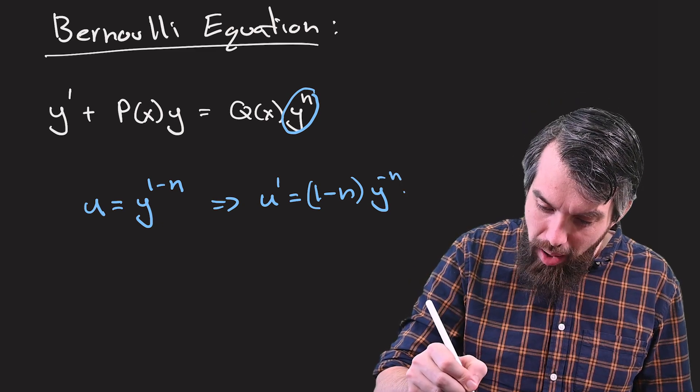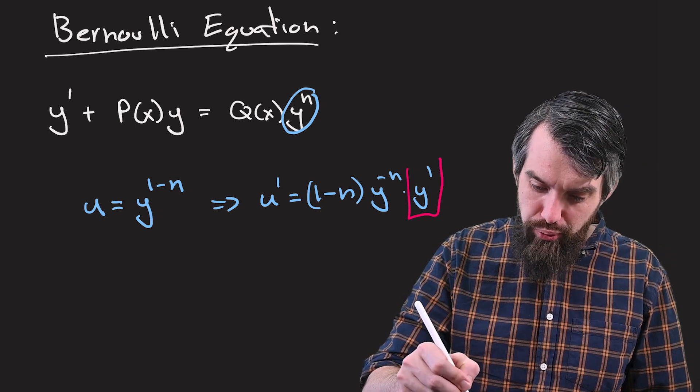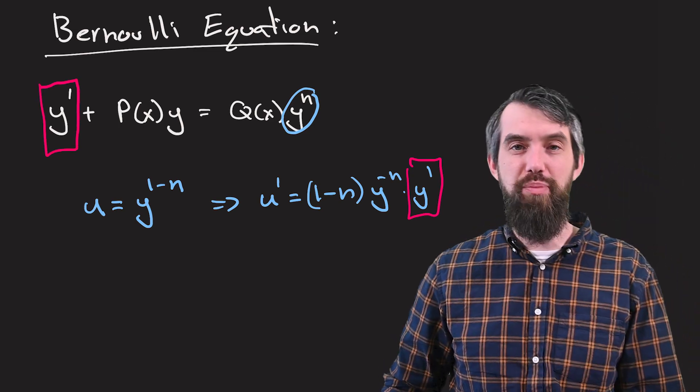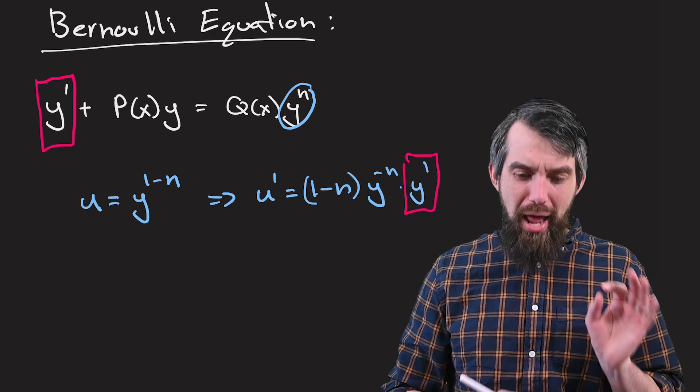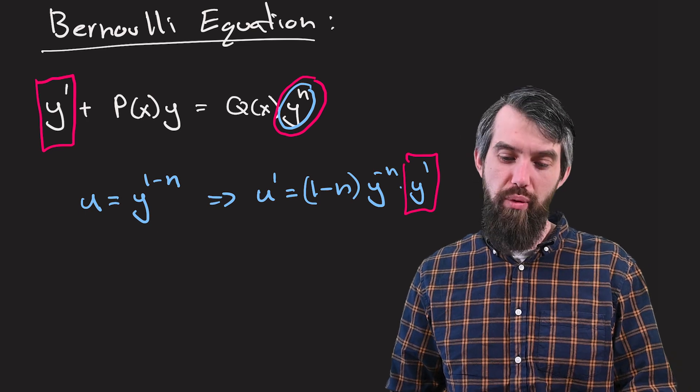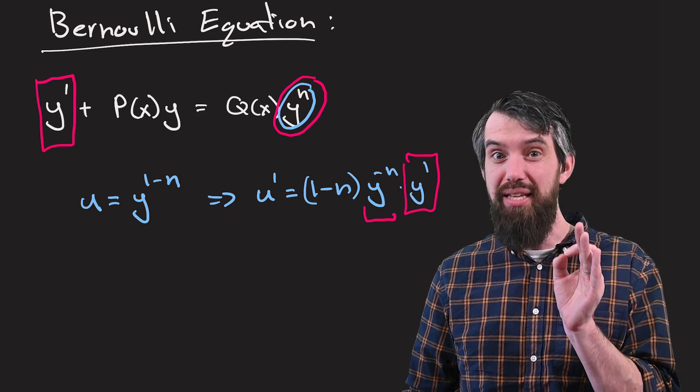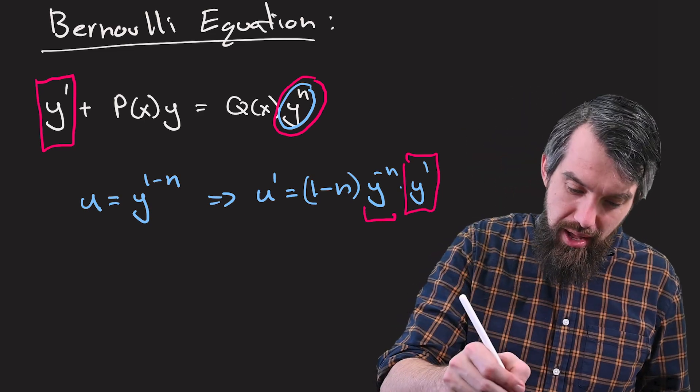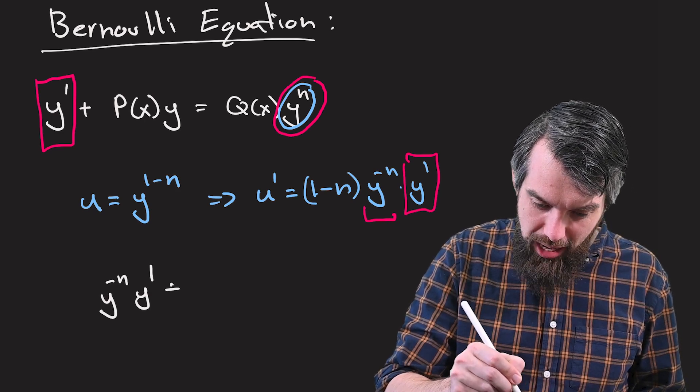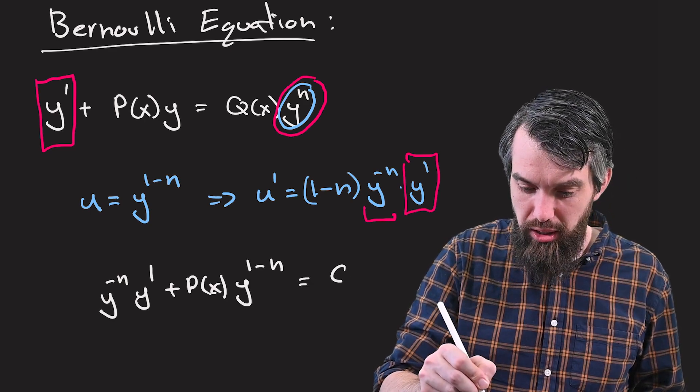Now, what I'm going to observe here is that I have this y prime appearing in my u prime formula, but then I also can connect this to the original equation because I have a y prime there as well. So what I'm actually going to notice, I've got that y to the n in the original equation. And then I also have a y to the n, except it's on the bottom. So why don't we just align this? I'll just divide out the equation by y to the n. So that's going to give me y to the minus n times y prime plus p of x times y to the 1 minus n is equal to q of x.